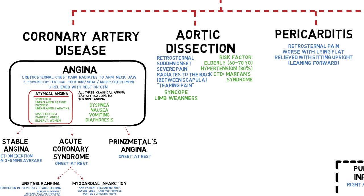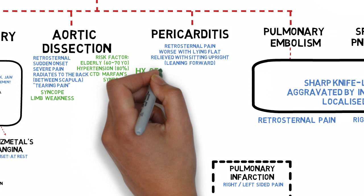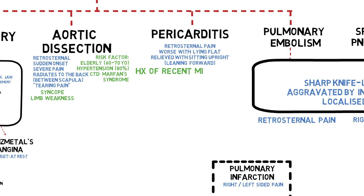In pericarditis, chest pain may be the only symptom and is commonly caused by recent myocardial infarction, also known as Dressler's syndrome. Other causes are uraemic pericarditis seen in chronic kidney disease, autoimmune diseases such as SLE, and viral infections such as Coxsackie or echovirus. In that case, the patient may also have a recent history of viral-like illness or symptoms.